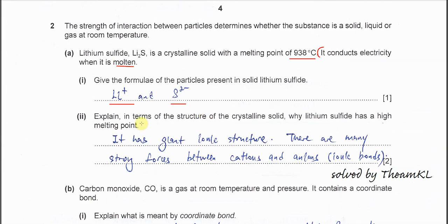Part ii. Explain in terms of the structure of the crystalline solid. We must put giant structure. It has a giant ionic structure and there are many strong forces between the cation and anion, or ionic bonds. That's the reason why it has a high melting point. In the structure there are a lot of ionic bonds.